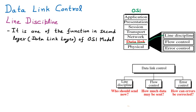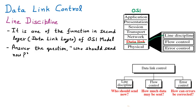Line discipline answers the question: who should send? All data link protocols combined are called Data Link Control, and within that we have line discipline. When multiple systems are connected through one line or channel, there needs to be some discipline. If all systems send at the same time, there is a chance of collision. If each system knows when to send — for example, you send on the first minute and I send on the second — there will be no collision. So who should send first is taken care of by line discipline.